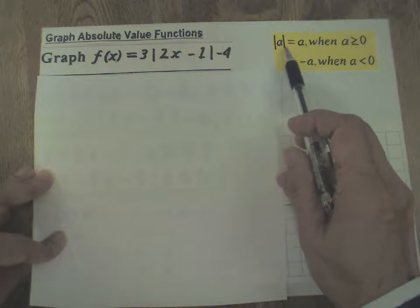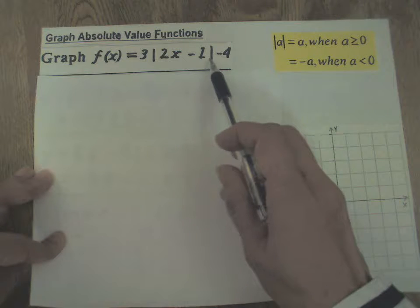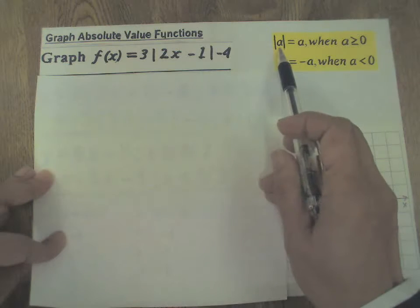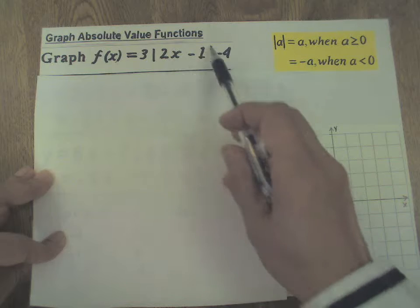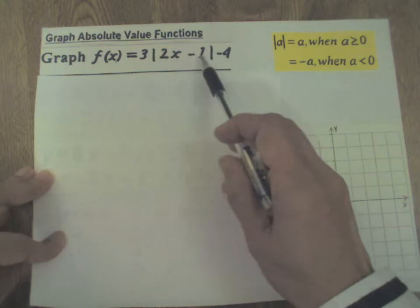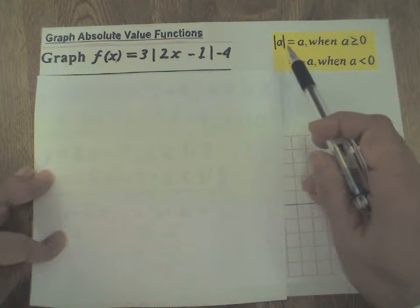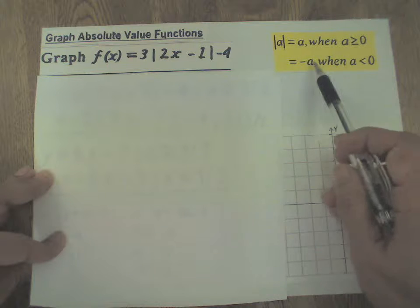Note the only difference between absolute value of a and absolute value of 2x - 1 is instead of an a you have 2x - 1. So to simplify absolute value of 2x - 1, just stick in 2x - 1 wherever you see an a.